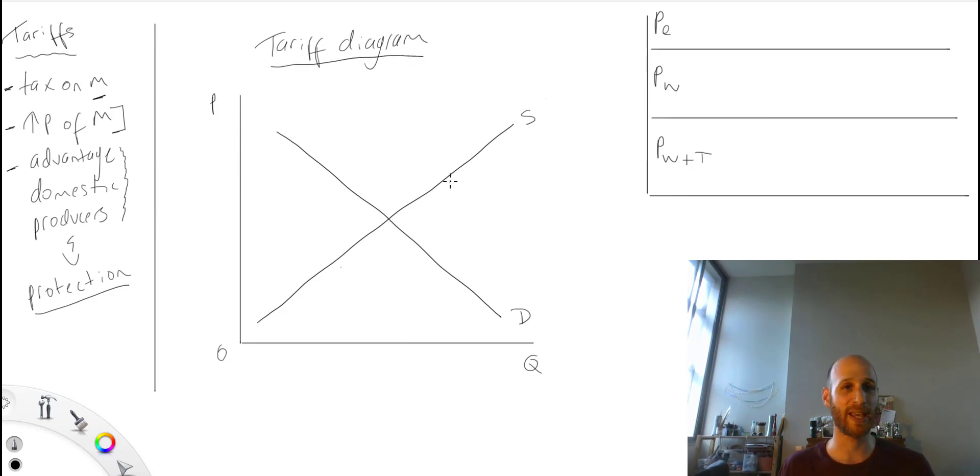So you can see here price, quantity, zero, supply, demand, all looking very familiar.